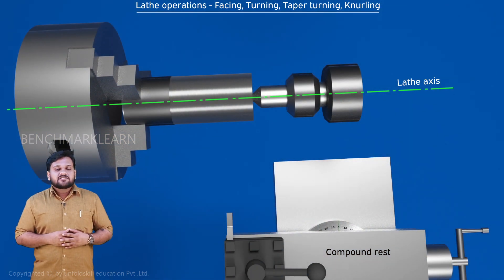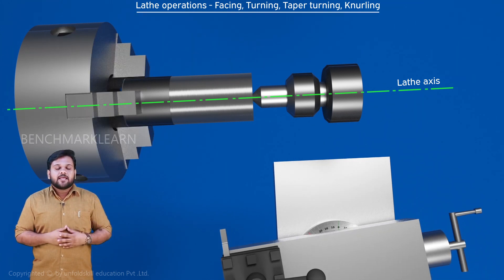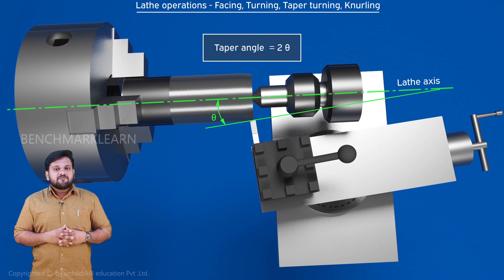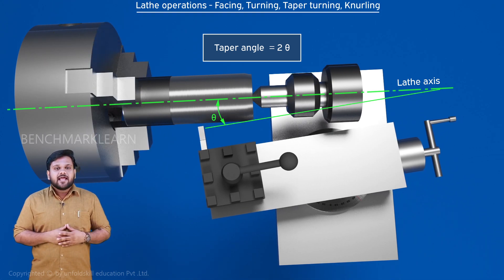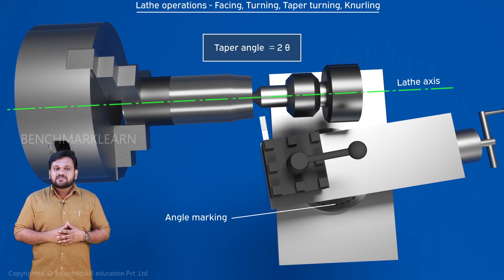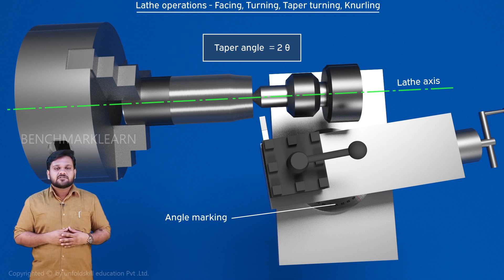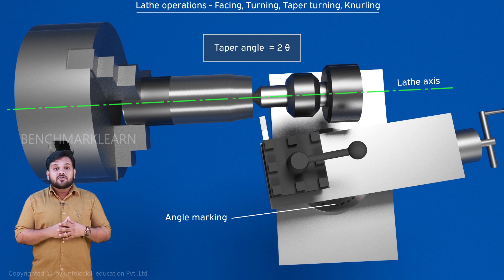The third one is the compound rest method. Here the compound rest on the cross slide is swiveled by half the taper angle. Now the feed given to the compound rest is not parallel but at a desired angle to the lathe axis. There are angle markings on the base of the compound rest, so any desired angle of taper is possible. But the distance the compound rest can move is limited, so taper length is much shorter than the tailstock set over method.